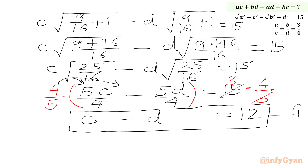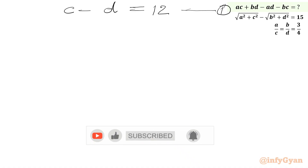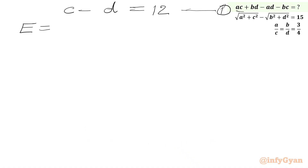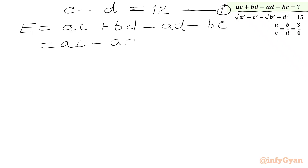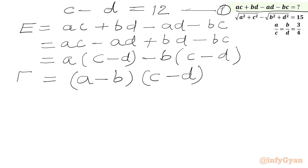This is equation number 1: c minus d equal to 12. Now we consider our required expression ac plus bd minus ad minus bc. Rearranging the terms: ac minus ad plus bd minus bc. Taking a common from the first two terms gives a times (c minus d), and taking negative b common from the last two gives minus b times (c minus d). So we can factor this as (a minus b) times (c minus d), which is our required expression e.